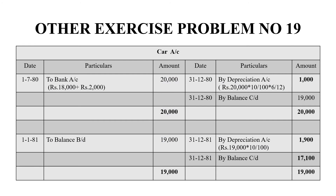Now we create the Car Account. As on 1-7-1980, a car was purchased for 20,000 rupees — that is 18,000 plus 2,000 — so we debit Bank Account with 20,000 rupees. At the end of that year, we calculated depreciation of 1,000 rupees for 6 months. The balancing figure is 19,000 rupees and the grand total on both sides is 20,000 rupees.